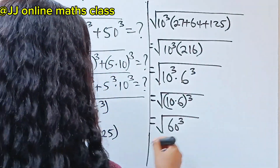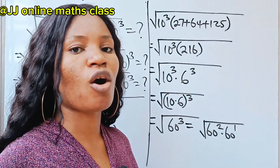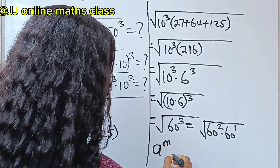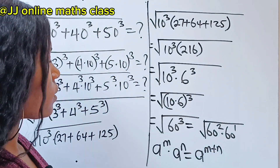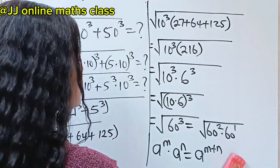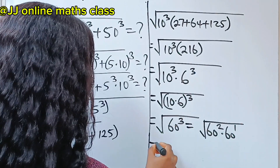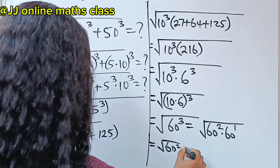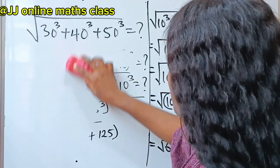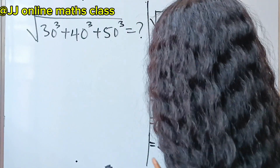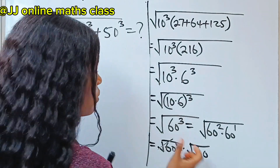We can express this as square root of 60 squared multiplied by 60 to the power of 1. Using the law of exponents, a to the power of m multiplied by a to the power of n equals a to the power of m plus n. So we distribute the square root sign: square root of 60 squared, multiplied by square root of 60. Square root of 60 squared gives us 60.